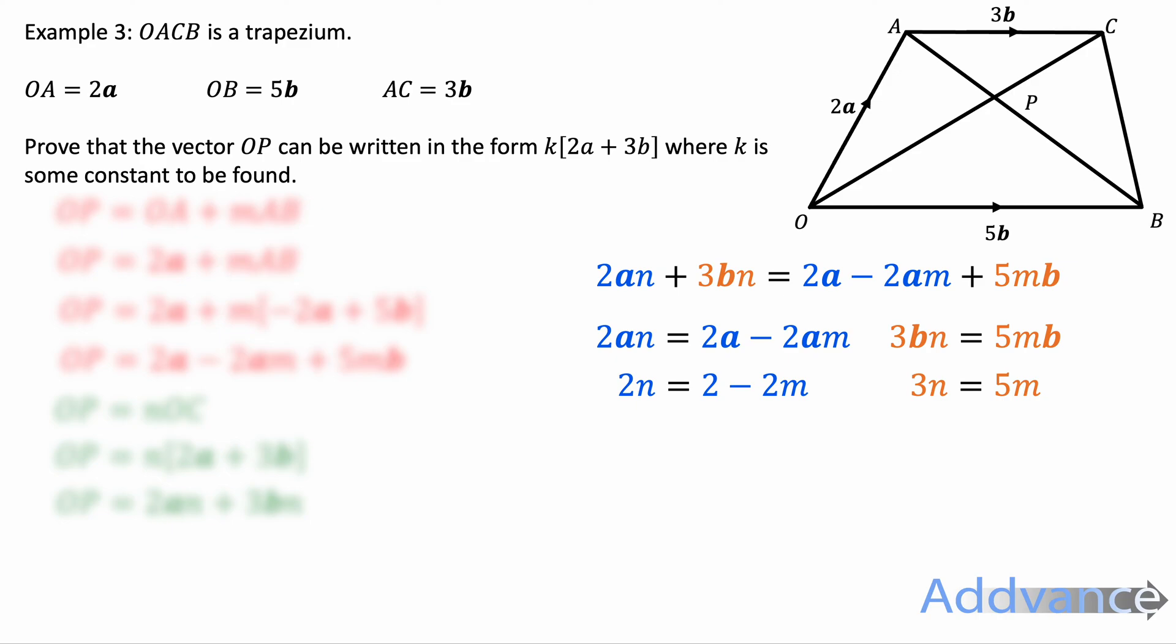This is a pair of simultaneous equations. I'm going to solve these simultaneous equations. If we divide by 2 we get n equals 1 minus m. And we've also got this expression here, 3n equals 5m.